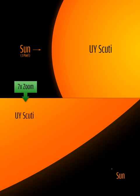A star is a sphere that is mainly composed of hydrogen and plasma, held together by gravity and is able to produce light through nuclear fusion.